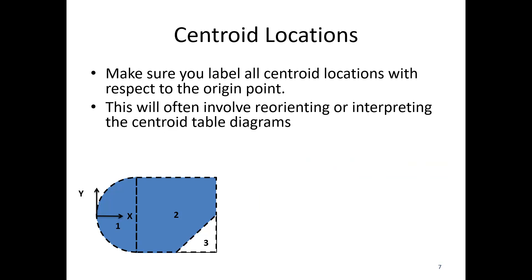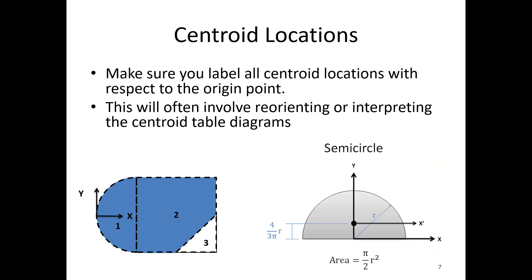Looking at shape one first: we go to the table, and this is what the semicircle looks like in the centroid table — it's rotated 90 degrees, so we need to rotate that mentally. The key centroid location is four over three pi times r, measured from the flat side of the semicircle. So I go one radius over, then four over three pi times the radius back — that's where the centroid is. I need its location relative to the origin axis, and if I know the radius, everything is based on that.